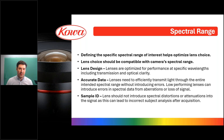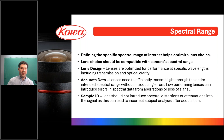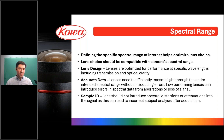Spectral range is very important in hyperspectral imaging. You really want to define your spectral range of interest, as this helps optimize your lens choice, and the lens choice should be compatible with that spectral range of your camera. Lens design matters here — lenses are often optimized for performance at specific wavelengths, including transmission and optical clarity, through the materials used, the design of the lens, and coatings. Some lenses may be optimized for UV, wideband, near-IR, or SWIR. If you're trying to capture something outside those areas, you may have issues with acquisition quality.